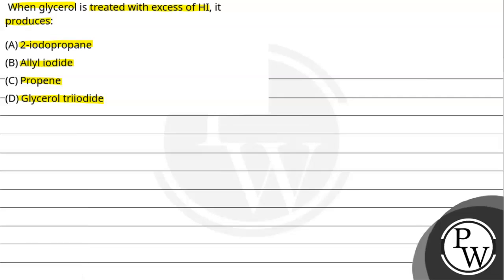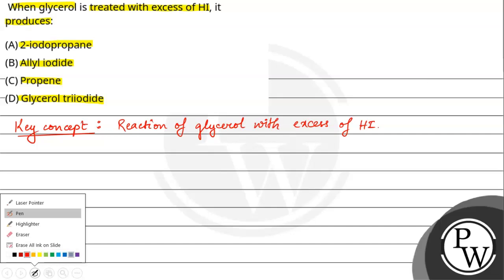We are talking about glycerol when treated with excess of HI, then what is the product? We will look at this question's key concept: reaction of glycerol with excess of hydrogen iodide, HI. Let's look at this reaction.